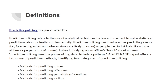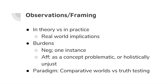A 2013 RAND report lists four categories of predictive policing: methods for predicting crimes, methods for predicting offenders, methods for predicting perpetrators' identities, and methods for predicting victims. All four are topical. On the affirmative you can argue one or all four are bad; on the negative you can argue one, two, three, or all four are good.